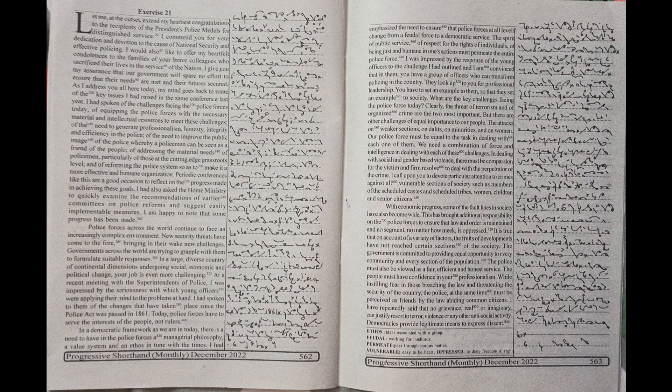We need a combination of force and intelligence in dealing with each of these challenges. In dealing with social and gender-biased violence, there must be compassion for the victim and firm resolve to deal with the perpetrator of the crime. I call upon you to devote particular attention to crimes against all vulnerable sections of society such as members of the scheduled caste and scheduled tribes, women, children, and senior citizens. With economic progress,